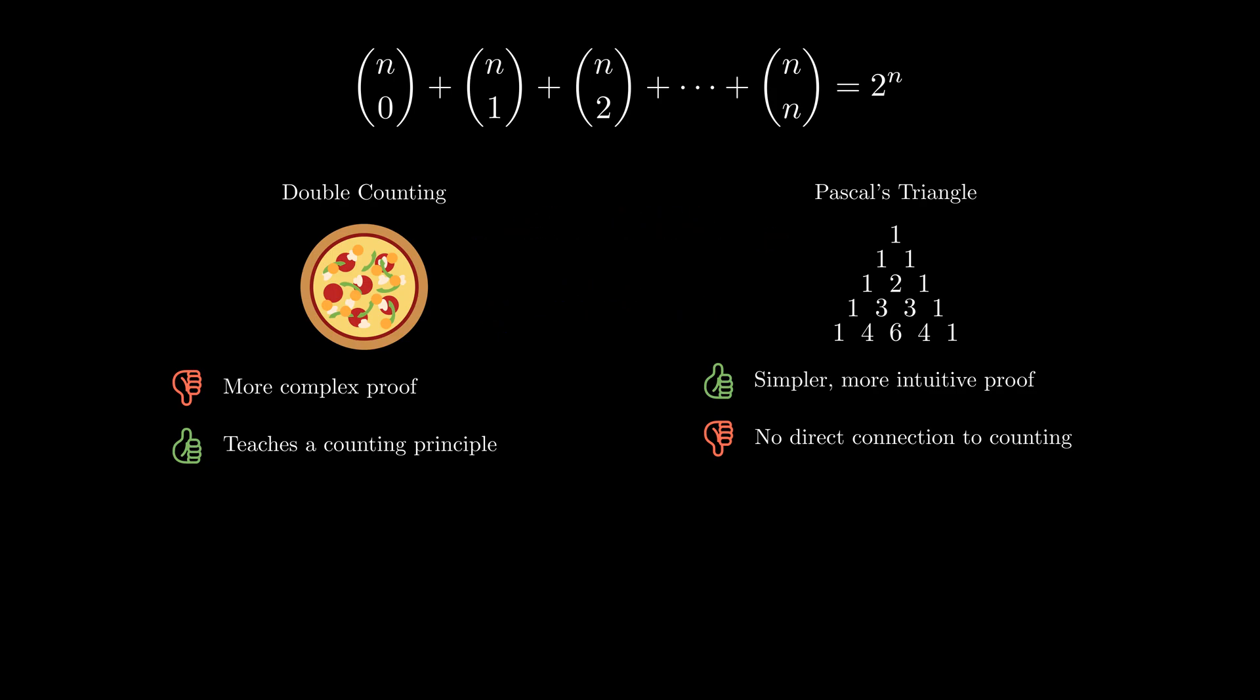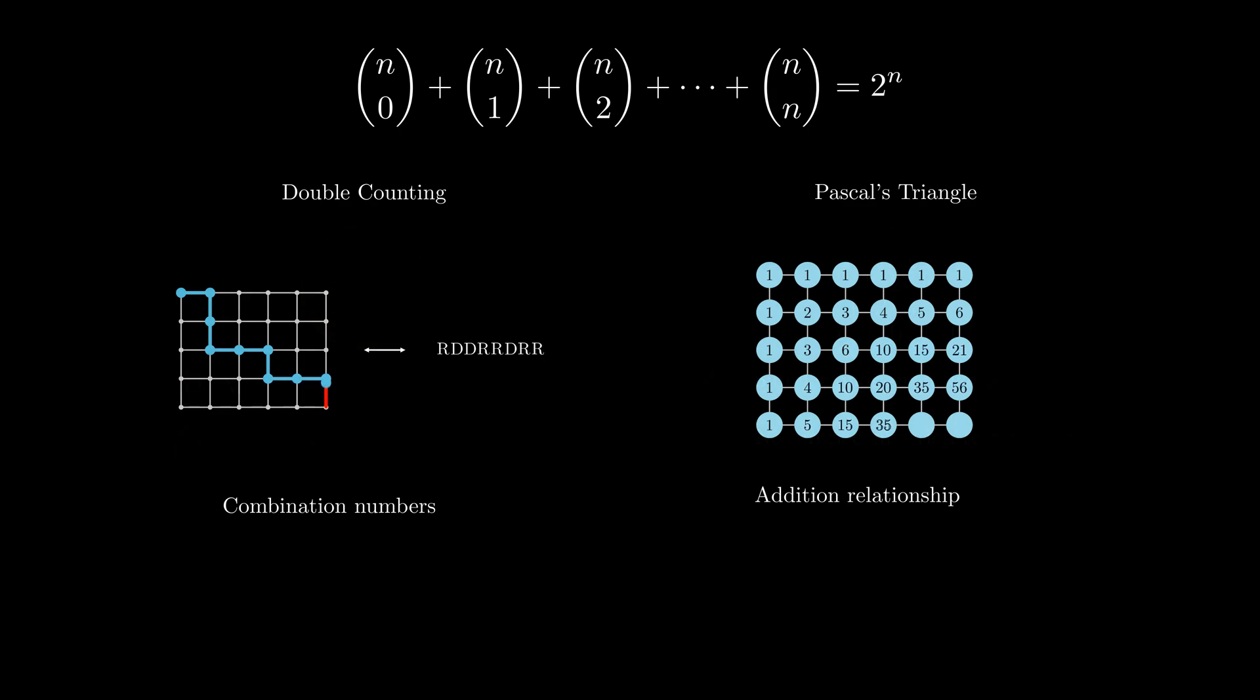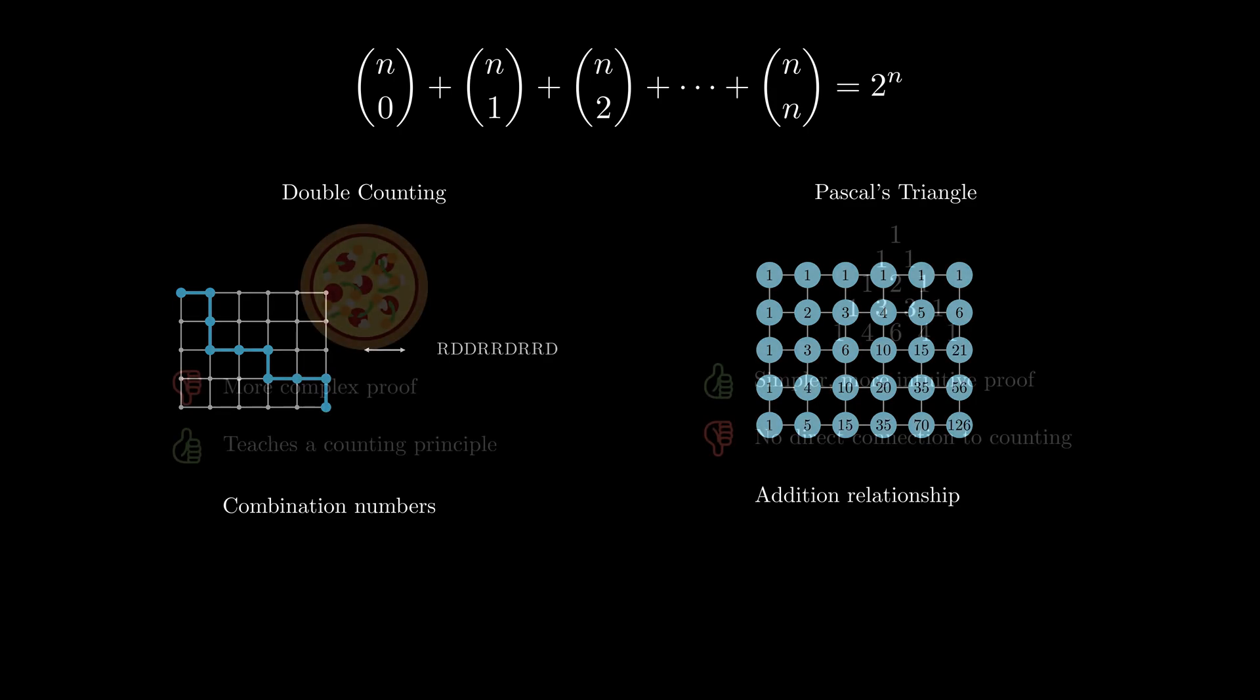For this particular combinatorial identity, both the double counting method and the Pascal's triangle method are relatively simple, but there are some identities that are easy using double counting methods and hard using Pascal's triangle, or vice versa. The reason why they are so different is because the double counting method treats the numbers in Pascal's triangle as combination numbers, and the Pascal's triangle method treats the combination numbers as numbers that are related via addition. These are generally very different relational structures, so it's no surprise that they produce different approaches to a proof.